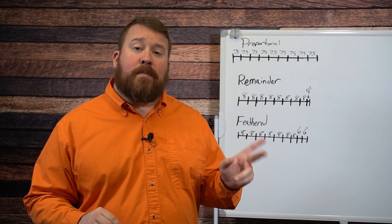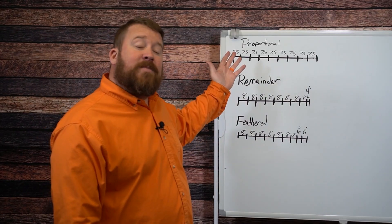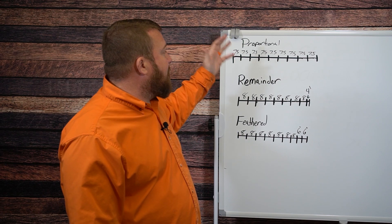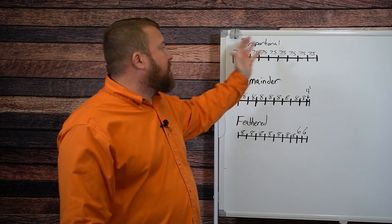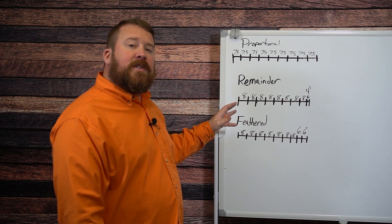There's the proportional, the remainder, and the feathered, and here's what they look like. The proportional method is exactly what it sounds like. Each section is evenly spaced, the entire distance of the fence has even proportional sections.